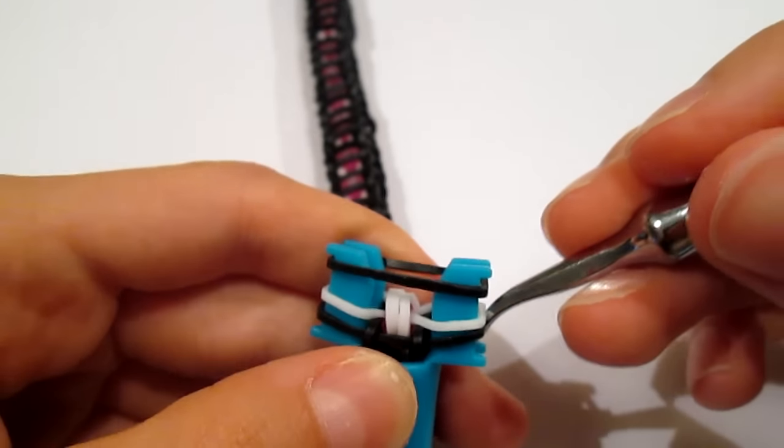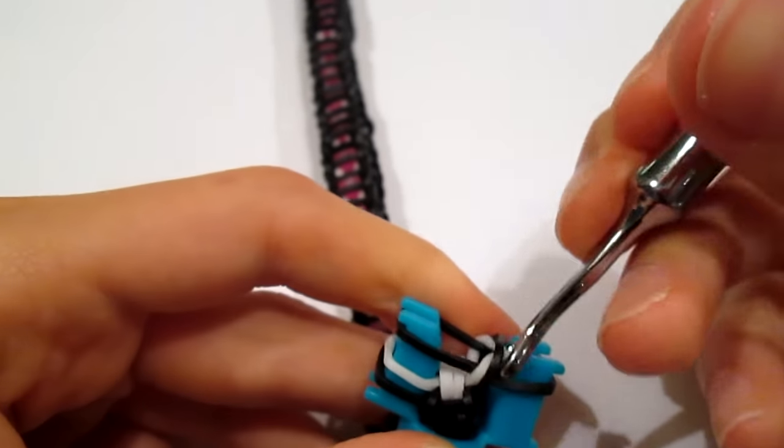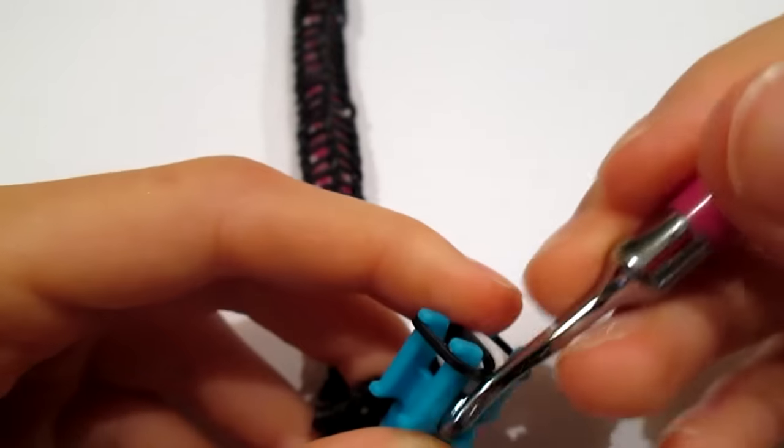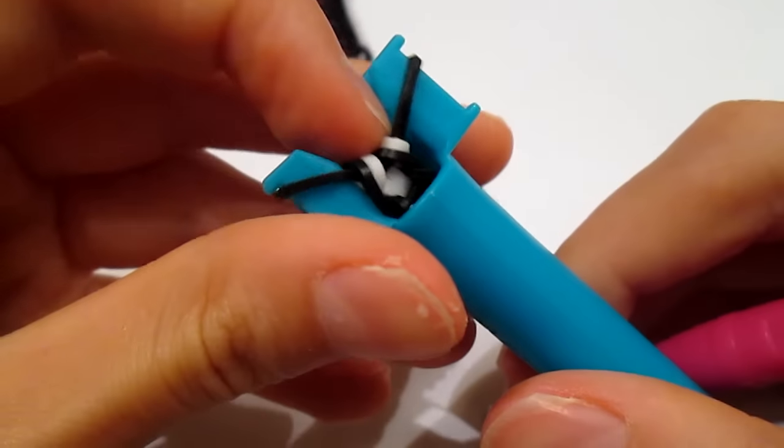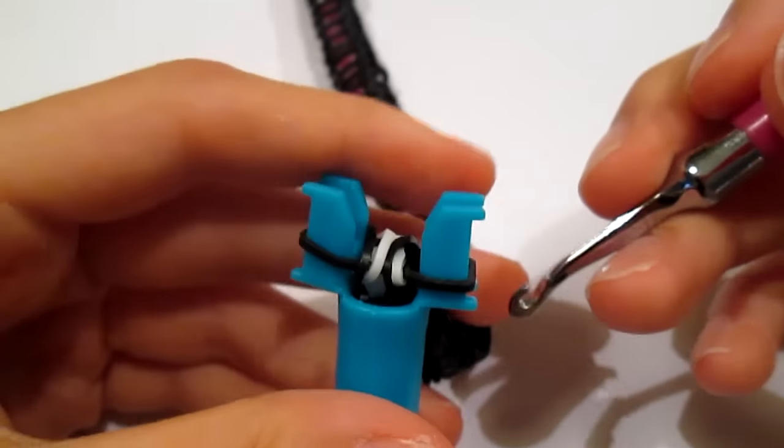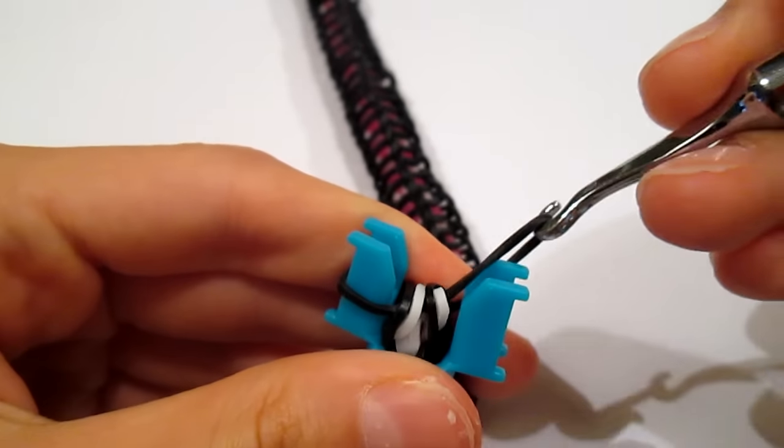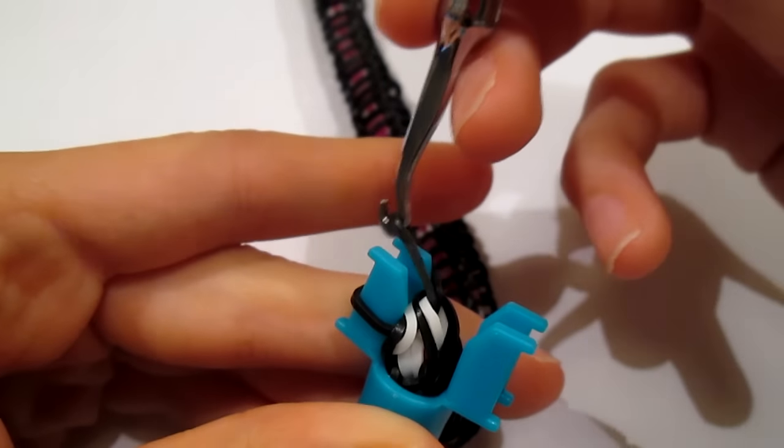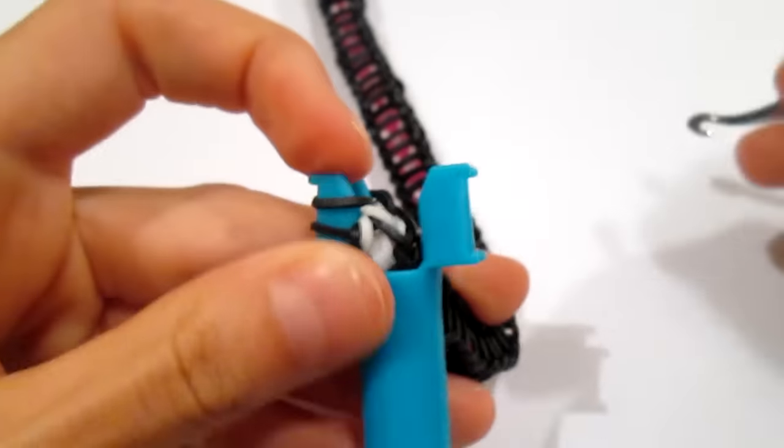And then, you're going to take these two bands and loop them over. And same on the other side. And then, push down. Take one end of the black, put it on the same peg as the other end of the black.